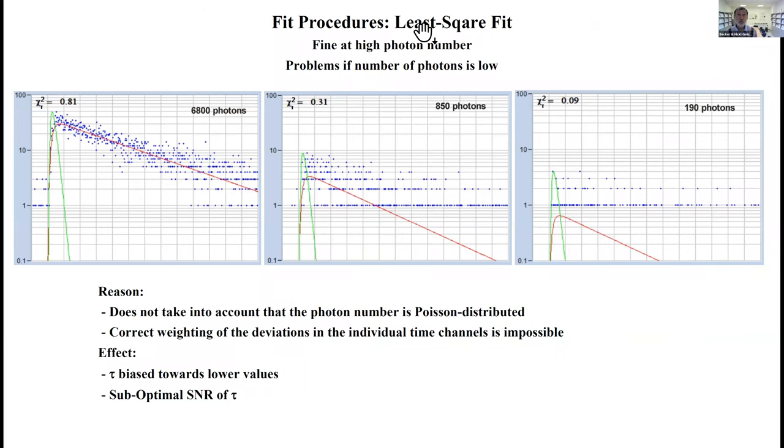You all know what the least square fit is. You have a model function, this is the right curve here. You compare the value of the model function with a measured photon number in this time channel. You square the difference, sum up all the differences, and this gives you a measure of how accurately the model function matches the fluorescence decay. This works very well at high photon number and at medium photon number it still looks reasonably okay.